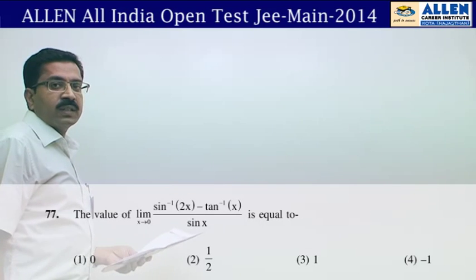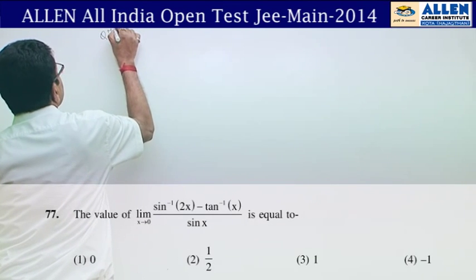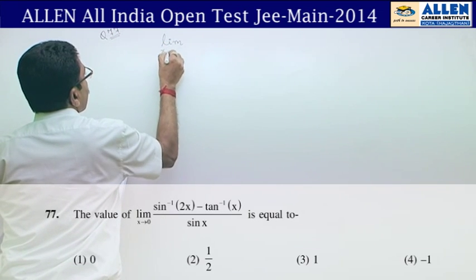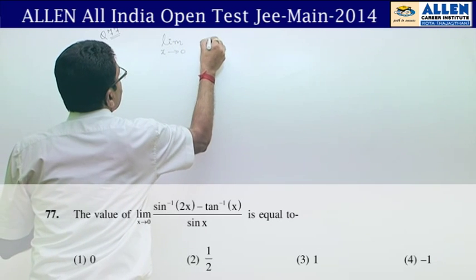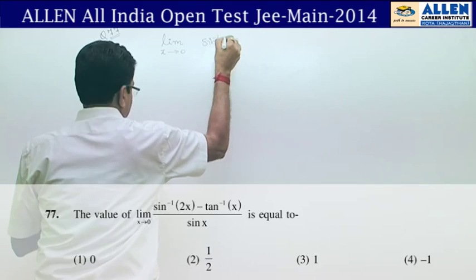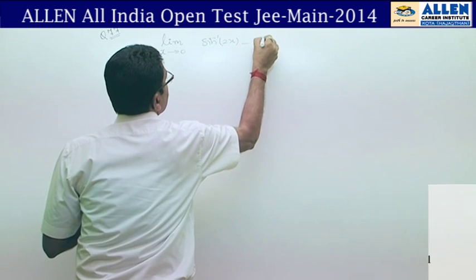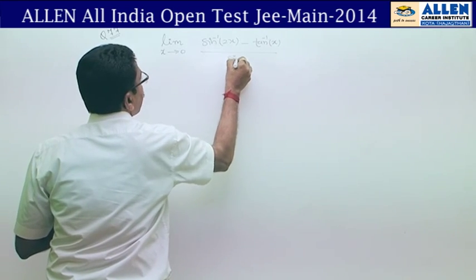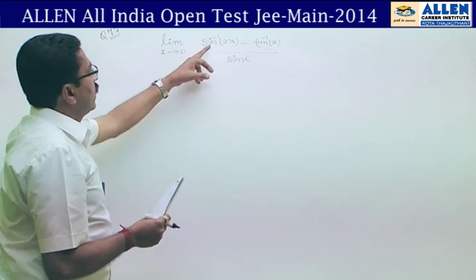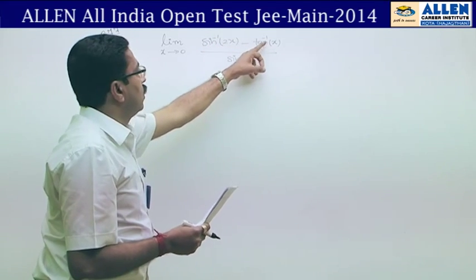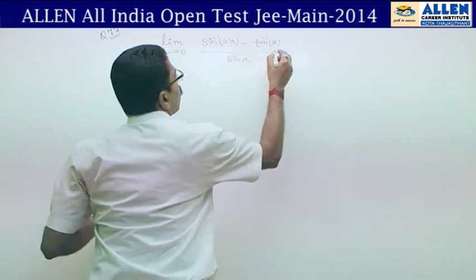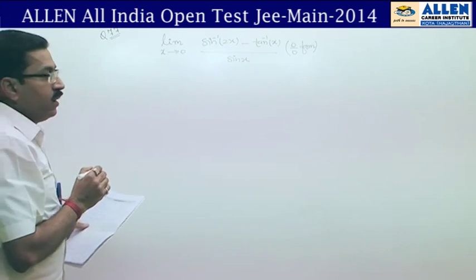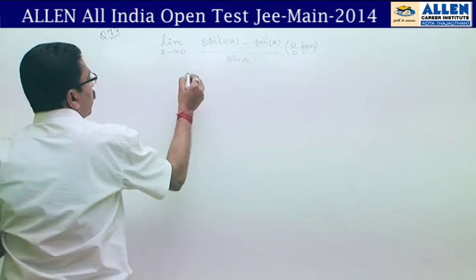Question number 77: Find the limit as x→0 of (sin⁻¹(2x) − tan⁻¹(x)) / sin x. Substituting x = 0: sin⁻¹(0) = 0, tan⁻¹(0) = 0, sin(0) = 0. The form is 0/0, so we apply L'Hôpital's rule.